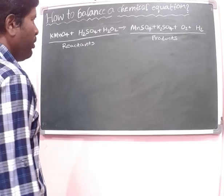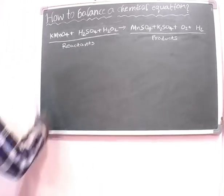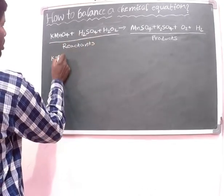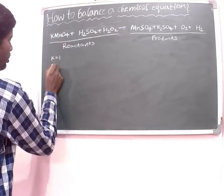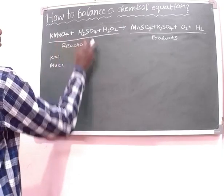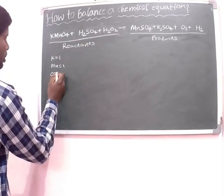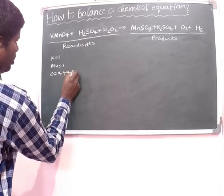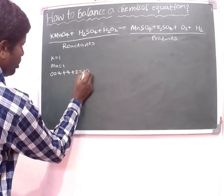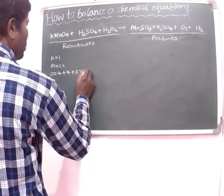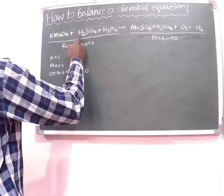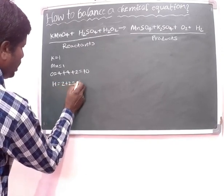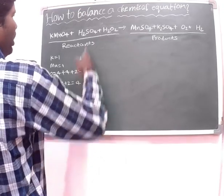Now we can balance the number of atoms in the two sides. In the left-hand side, the reactant side: the number of potassium atoms is 1, the number of manganese atoms is 1, the number of oxygen atoms is 4 plus 4 plus 2, that is equal to 10, the number of hydrogen atoms is 2 plus 2, that is equal to 4, and the number of sulfur atoms is 1.